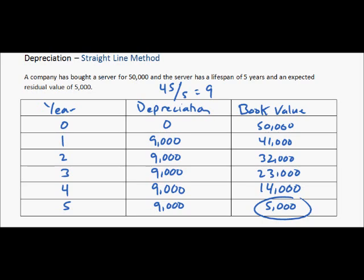And all we have to figure out basically is the difference between our year 0 value and our residual value. So that was $45,000 and divide that by the number of years that it will be depreciated.